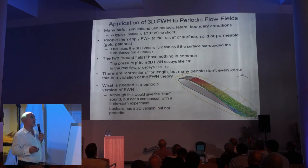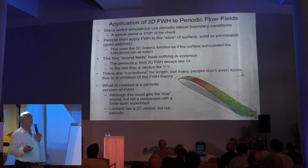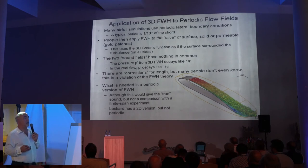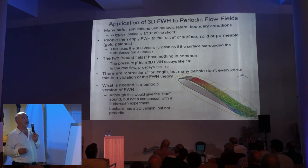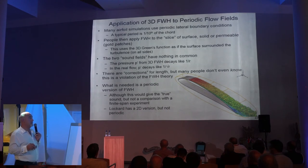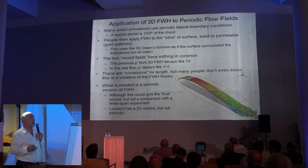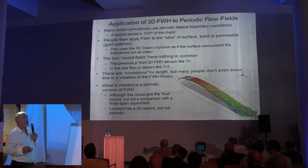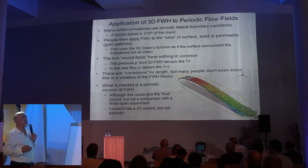What disturbs me is that many people in the community don't even know this is a complete violation. Using 3D Ffowcs Williams–Hawkings for a periodic flow is just plain wrong. What is needed would be a periodic version — I don't have one yet; Lockhart has a 2D version of FW-H but not a periodic one. If we had this periodic version, it would give the true sound of the simulation that you could compare with the directly computed sound. But comparison with a finite-span experiment would still be quite arbitrary — comparing the sound of a slice of airfoil to a finite wing is really risky.